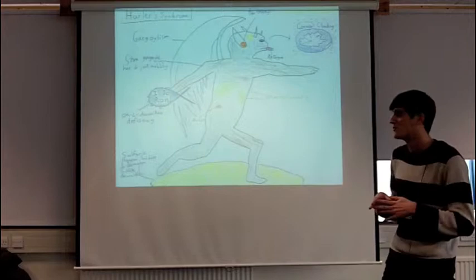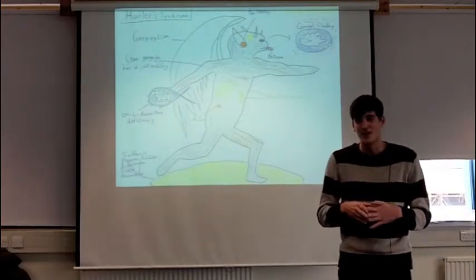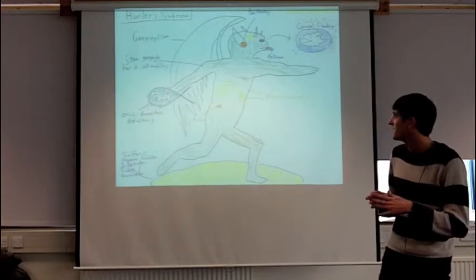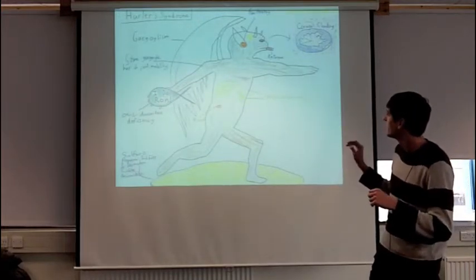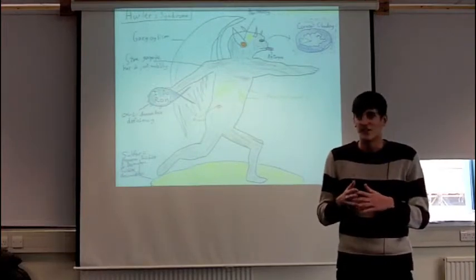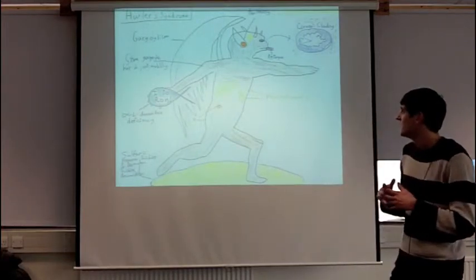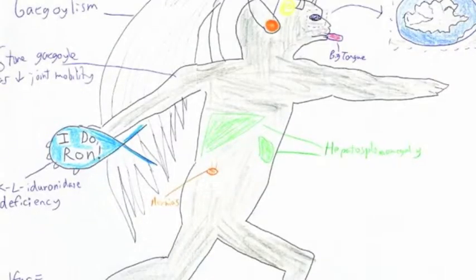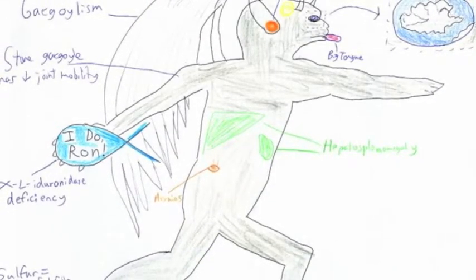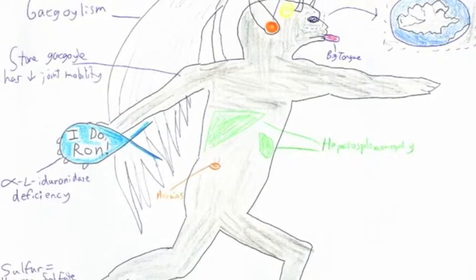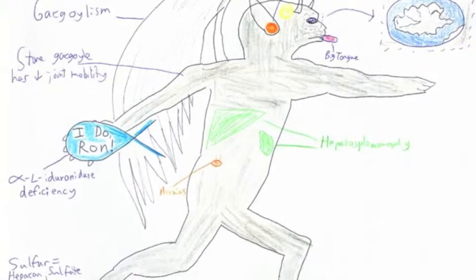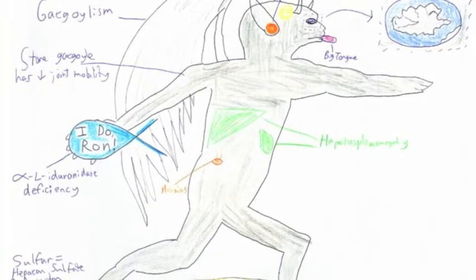This image is from pictorialmnemonics.com, a website used by medical students. They draw these things — they use words and illustrations and upload them to the website where they discuss them and help each other learn about different syndromes. As you can see, Herder syndrome is linked with poor hearing, so they've drawn earwax and cloudy corneas — they've drawn a cloud. It's all about applying personal meaning to information using illustrations.